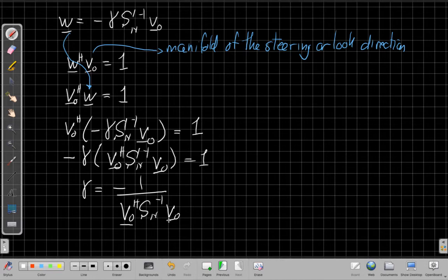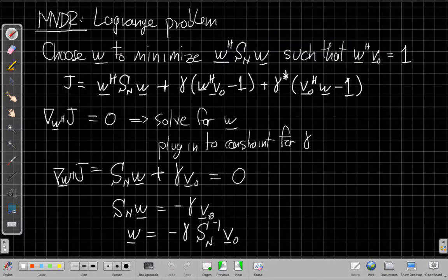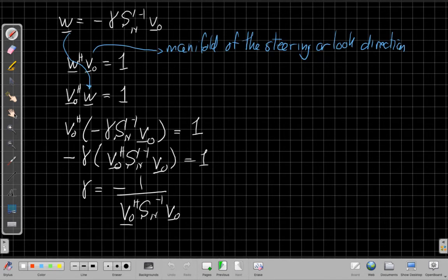So I've got this quadratic form of the look direction manifold vector with the SN inverse, the noise spatial covariance inverse. So if I put that all together, if I go back to my previous page, so I'm going to put that in for gamma, the two minus signs will cancel out when I plug in here, and I'll be left with a solution for W that looks like this.